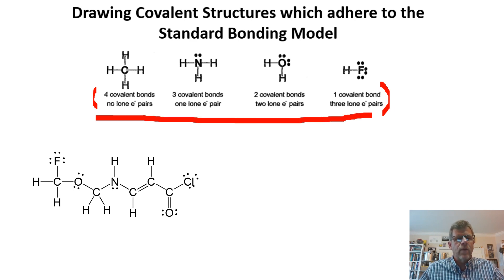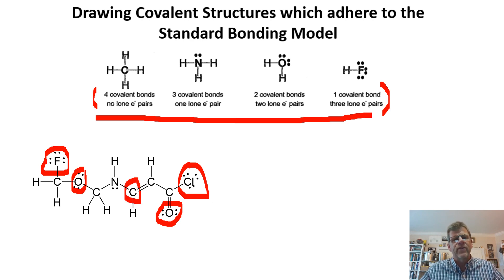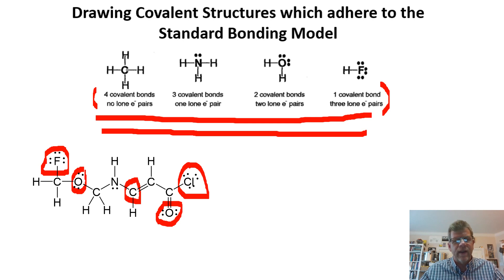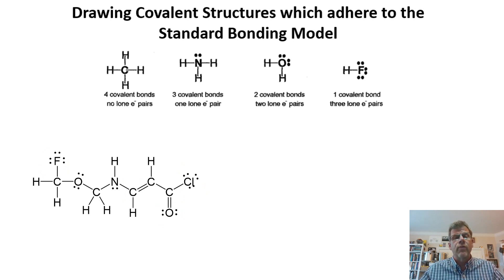Whether we're talking about halogens with one covalent bond and three lone electron pairs, or oxygen with two covalent bonds and two lone electron pairs, multiple bonds can come into the fray. That's still oxygen — two covalent bonds emanating from it, two lone pairs. We can have them between carbons or anything you like. As long as all of these criteria are adhered to, this is a viable covalent molecule.